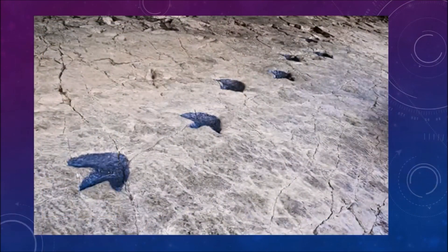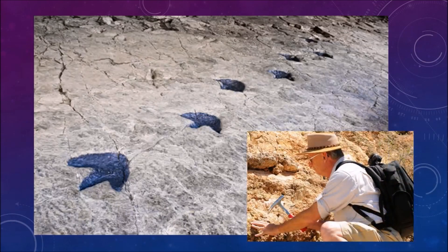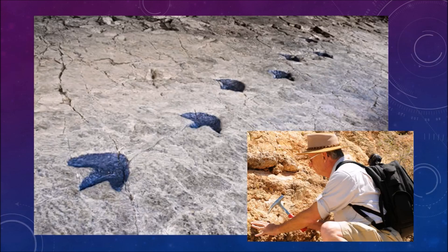But how did people decide how much time falls into each period? They did it with fossils. Fossils are awesome. They're the remains of prehistoric animals and plants. Ancient bones, teeth, shells and footprints that have been turned to stone.